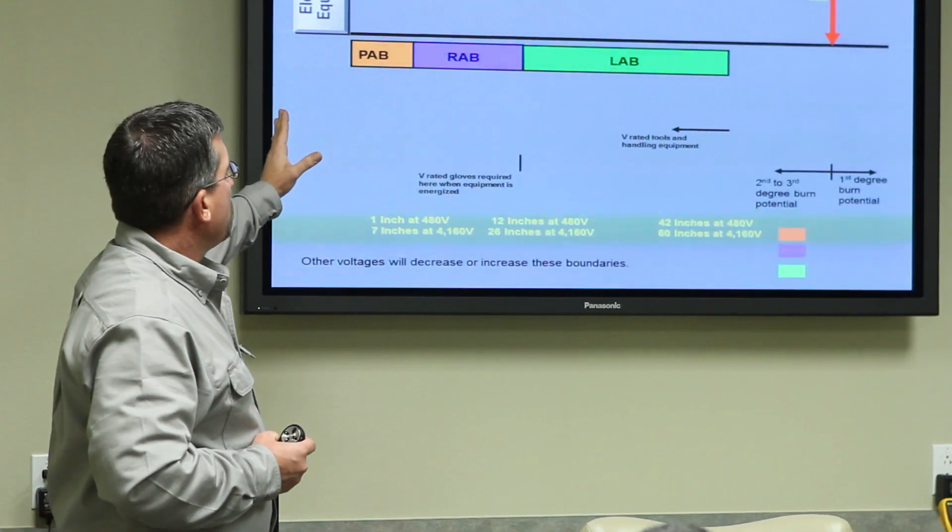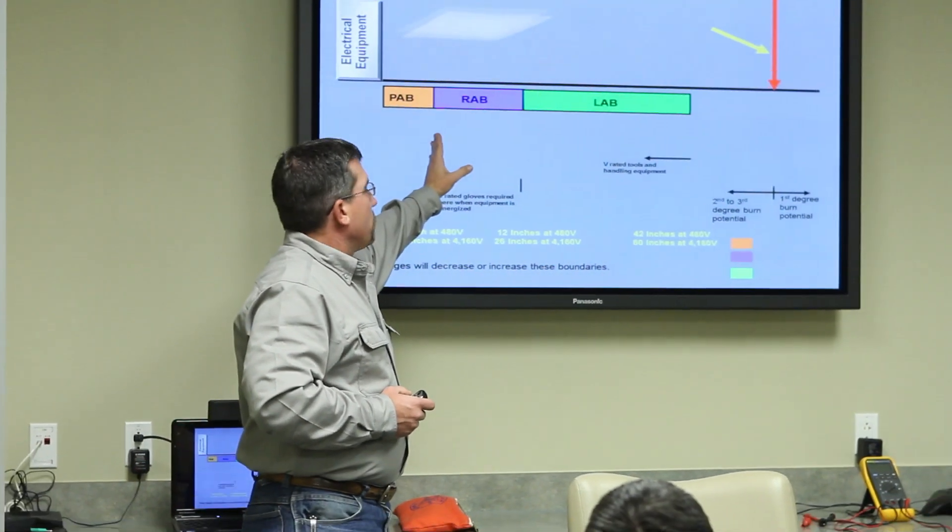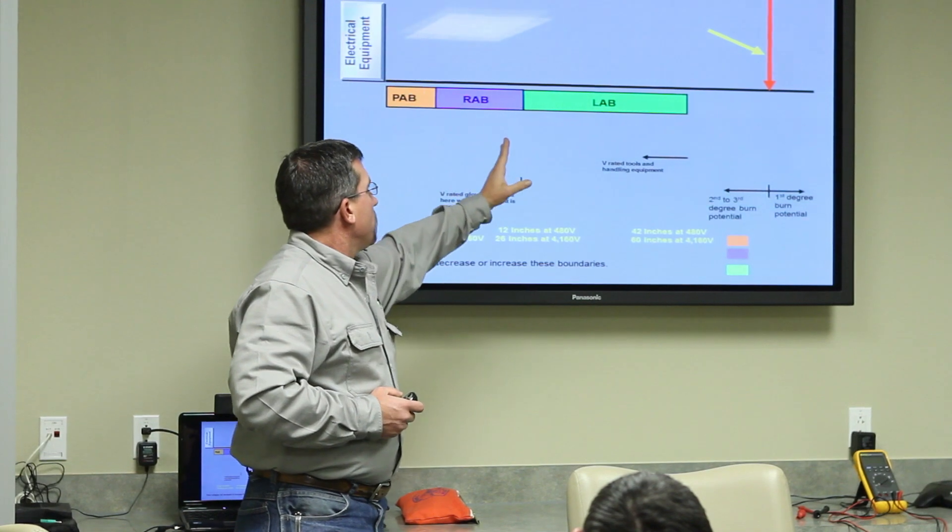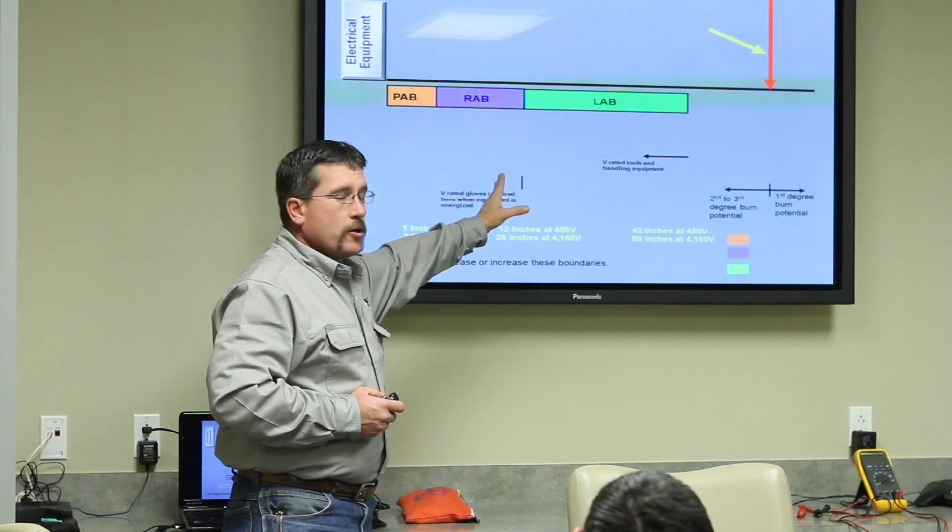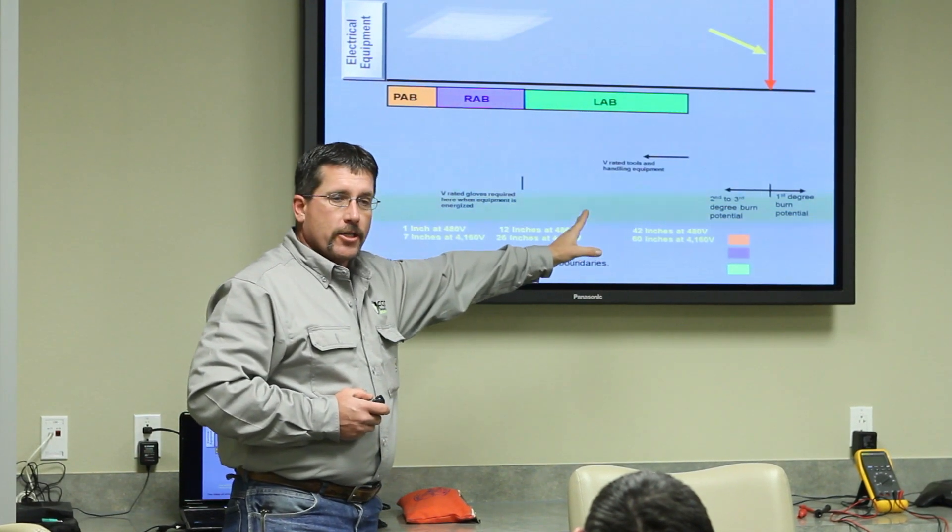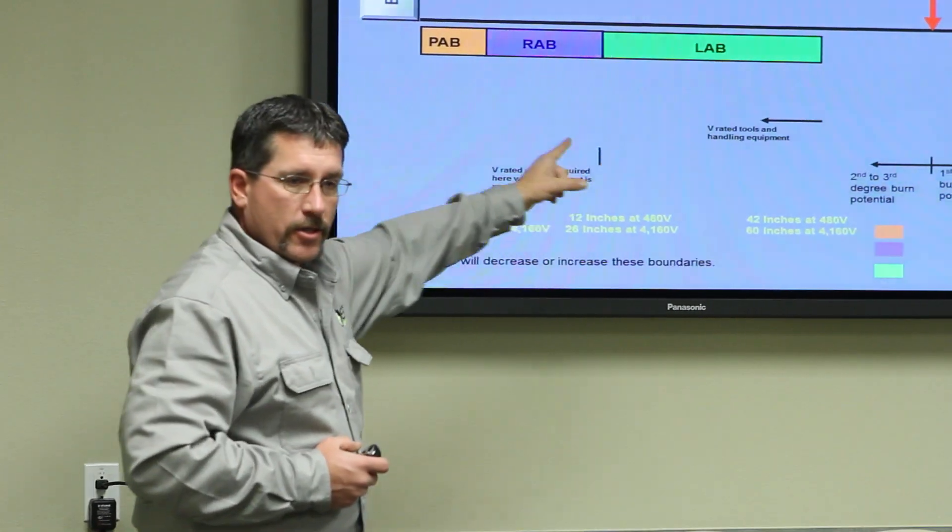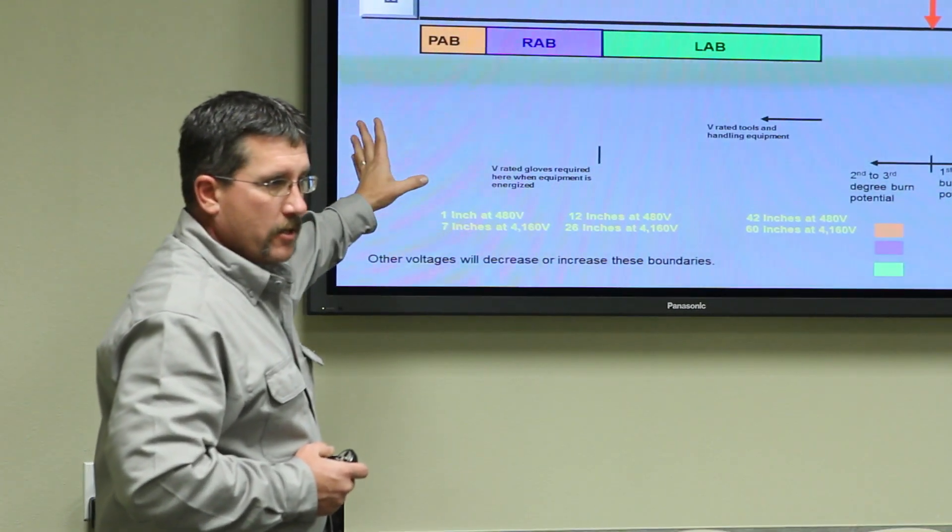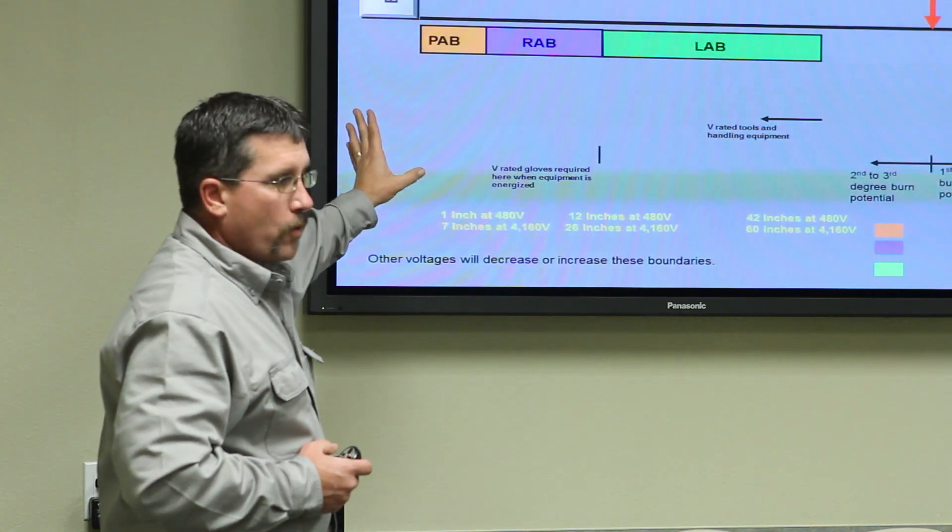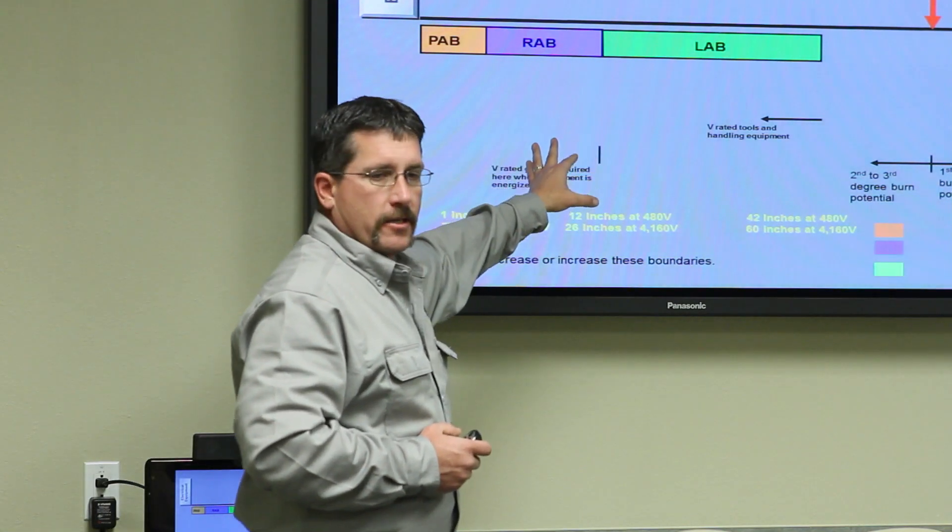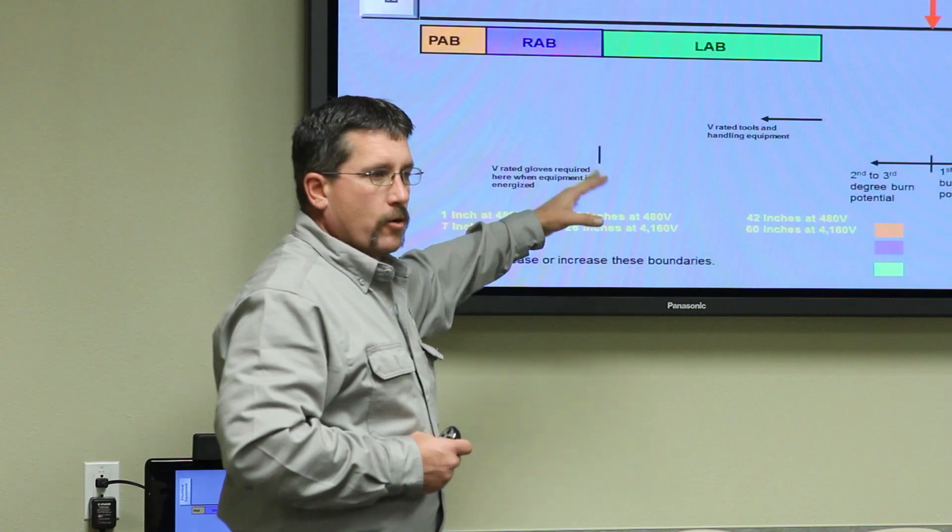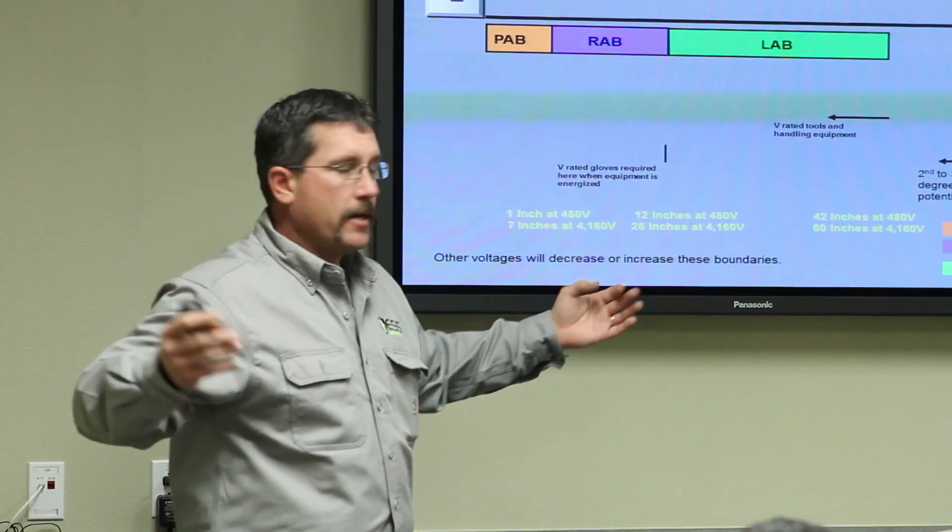It's 480 volts, so we have a 1-inch prohibited approach boundary, 12-inch restricted approach boundary, and 42-inch limited approach boundary. Those are your shock hazard boundaries. It has nothing to do with arc flash. If it says 480, those boundaries remain constant for everything that's 480. The boundaries get bigger the higher the voltage.